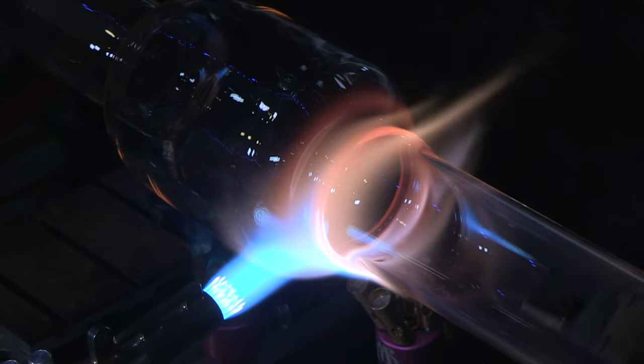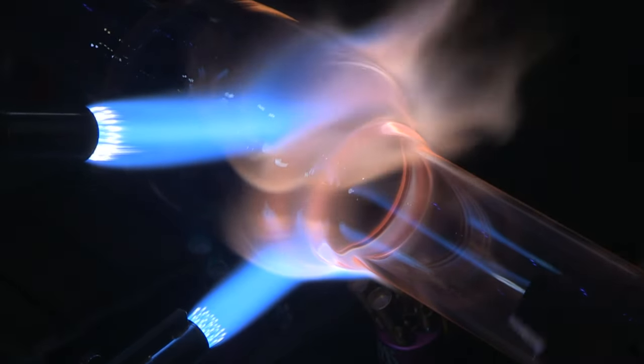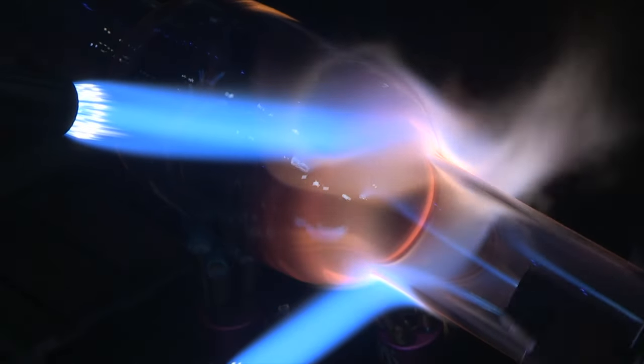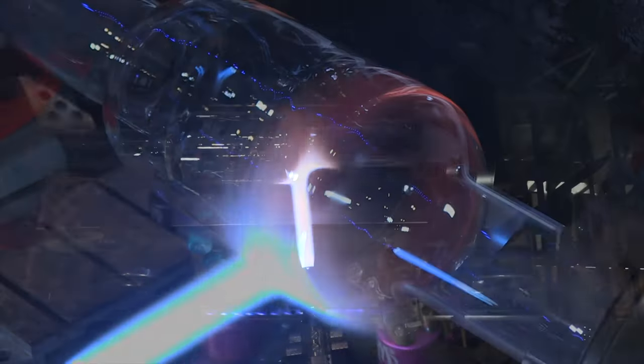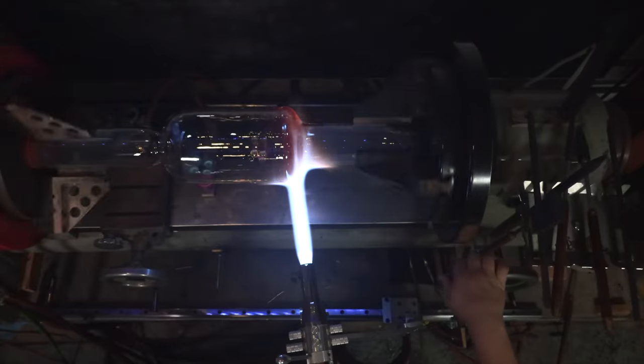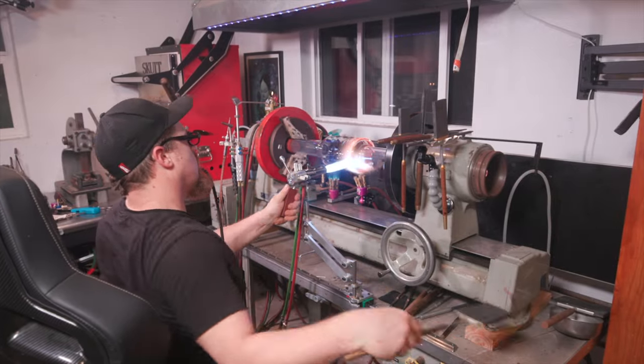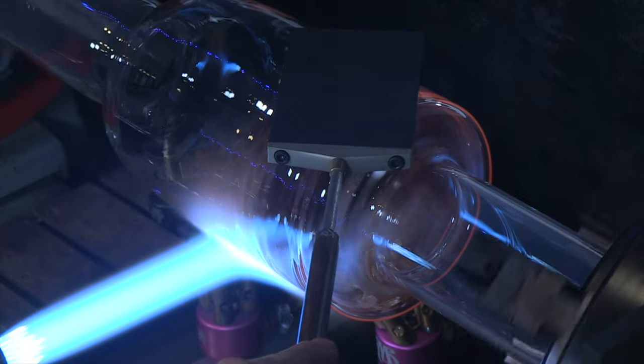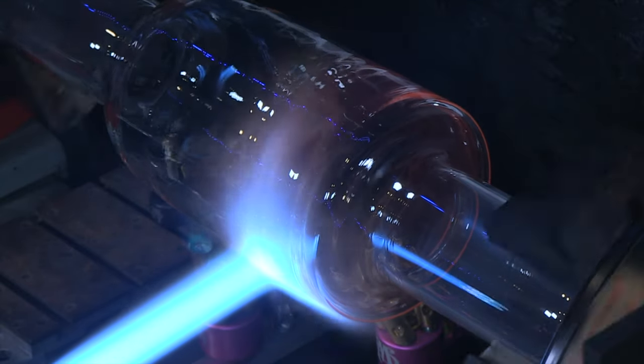So here we are taking turns in the hot seat because when you're sitting down, it was definitely hotter. So we kept switching off as we're blowing out the shape. Not a lot of people do borosilicate this big outside of scientific work. And when you see soft glass this big, it's usually done in a large furnace. This is definitely on the large size and even for this lathe, it's big. And yeah, it was hot.